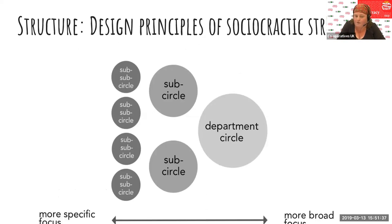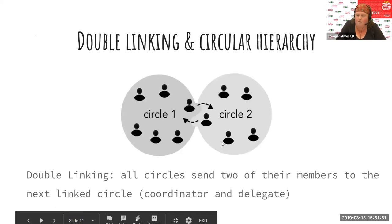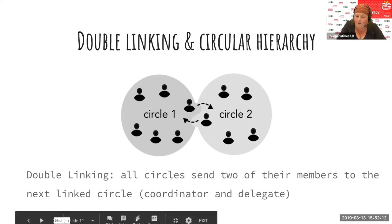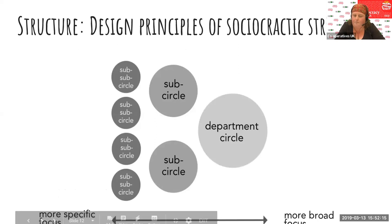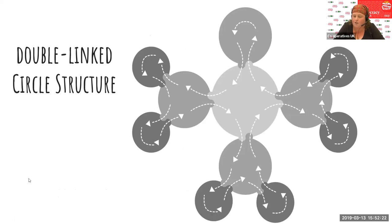Each circle would have a different range of focus. You have the more specific focus on your sub-circles or sub-sub-circles. As you move up through an organization, the focus gets broader. The coordinator takes the role of bringing the broader circle's perspective back into the more specific circle — framing decisions by what's going on in the business. The delegate represents the views of the circle and takes that into the broader focus. In that way, you should have a really good flow of information.